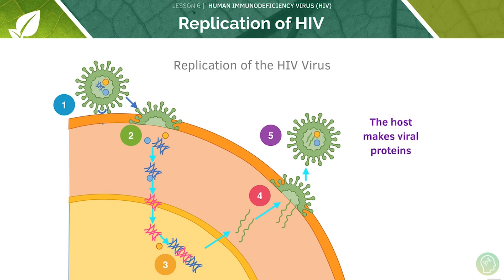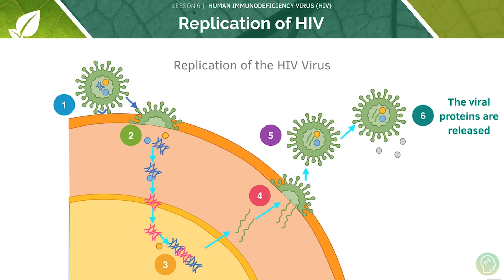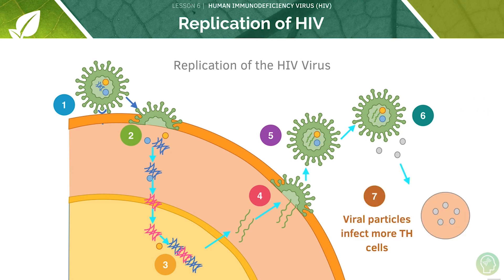Without making its own proteins, the cell can't survive. The viral proteins assemble at the cell membrane to form new viral particles and exit the cell through budding or exocytosis. A portion of the phospholipid bilayer is taken along with them to form the viral coat. Upon release, each new viral particle goes on to infect more T helper cells to replicate more HIV.